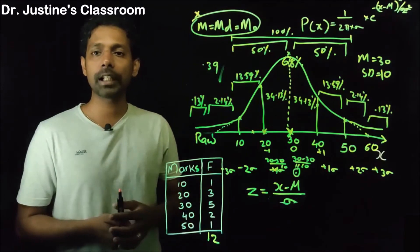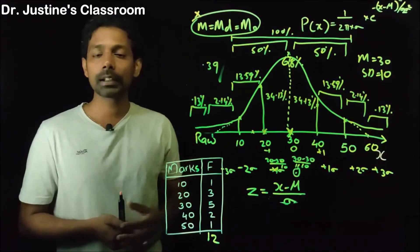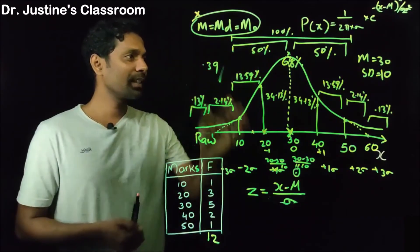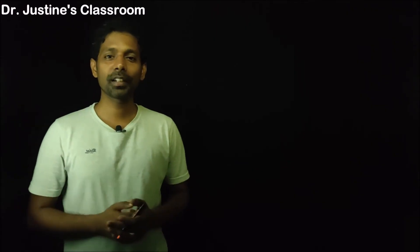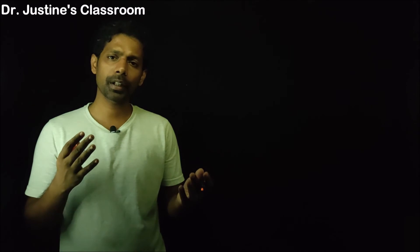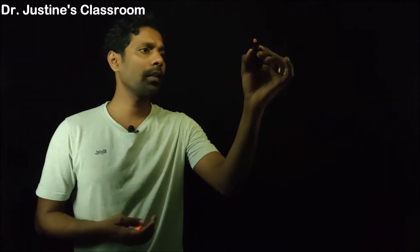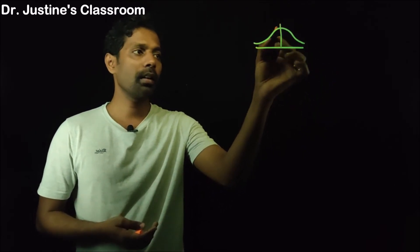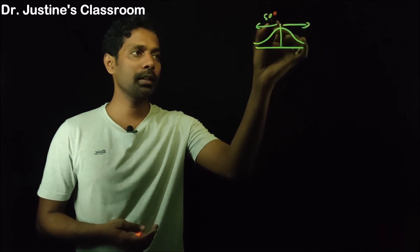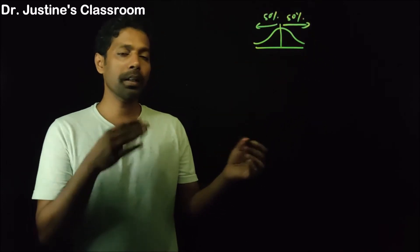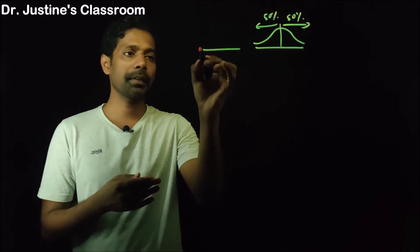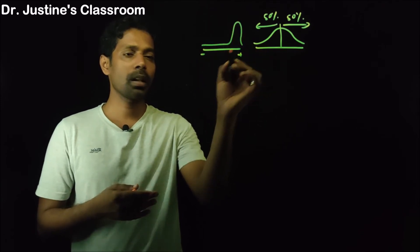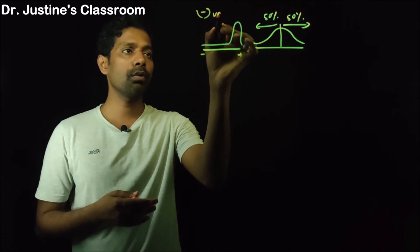There are two common deviations from a normal curve: skewness and kurtosis. Skewness refers to whether the data is symmetrical or non-symmetrical. In a perfect normal curve, 50% falls on each side. But what if most of the data falls on the positive side? This is called negatively skewed data. And if you have a curve where most data falls on the left with a tail going to the right, that is positively skewed data.